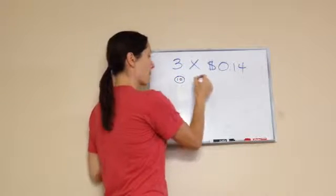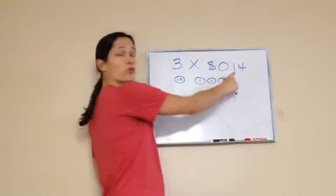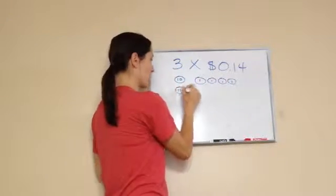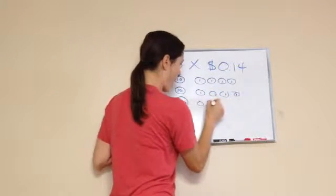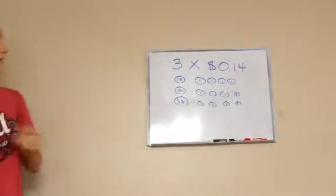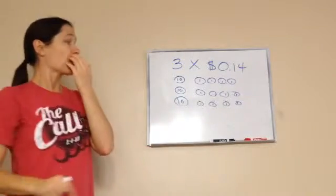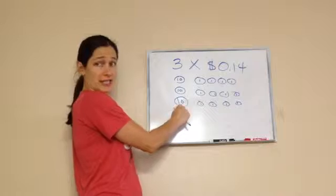So I'm going to have a dime and four pennies. Do you see that? That shows 14 cents, right? And they want me to do it three times. So I'm going to do three of them. See how I did that? So I have 14 cents, 14 cents, and 14 cents. Now, here I have 10, 20, 30 cents.